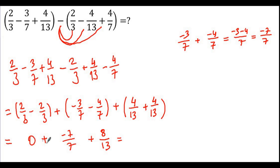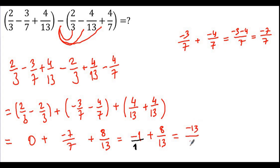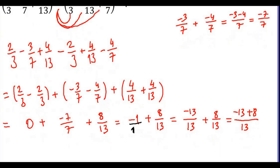Minus 7 over 7 is negative 1. So 0 plus negative 1 is negative 1, then negative 1 plus 8 over 13. Negative 1 is actually negative 1 over 1, so to make the denominators equal I rewrite it as negative 13 over 13. Adding the numerators: negative 13 plus 8 is negative 5, so negative 5 over 13 is our answer.